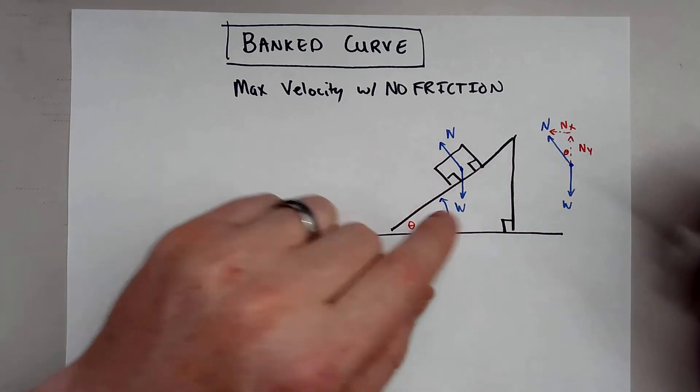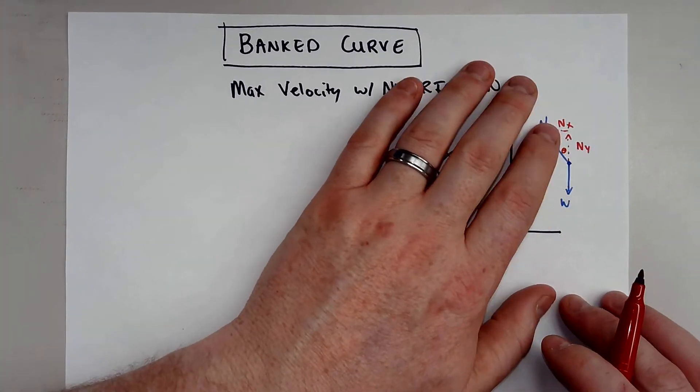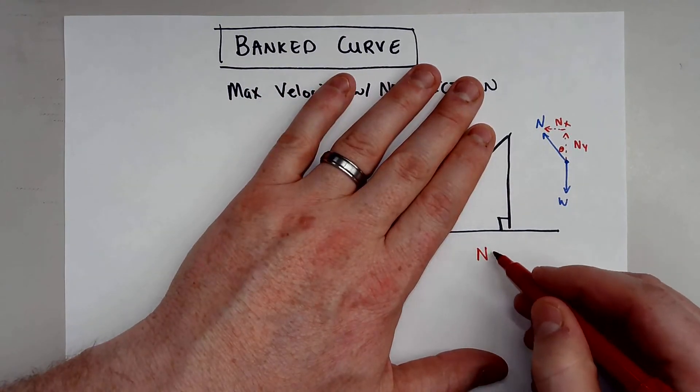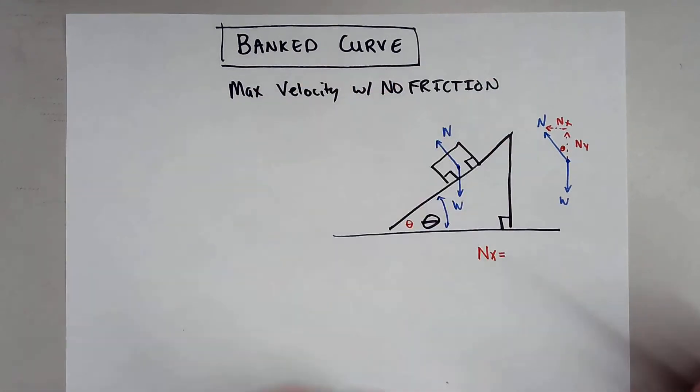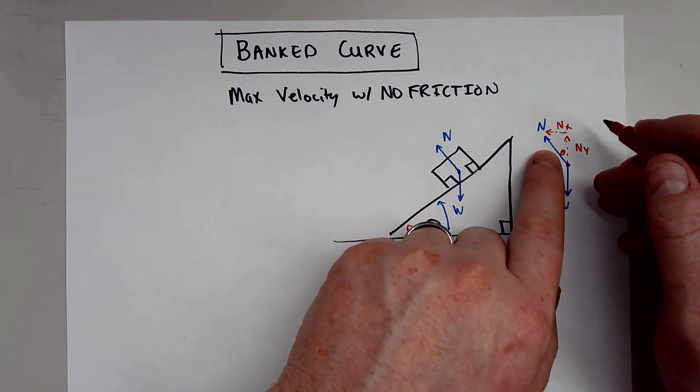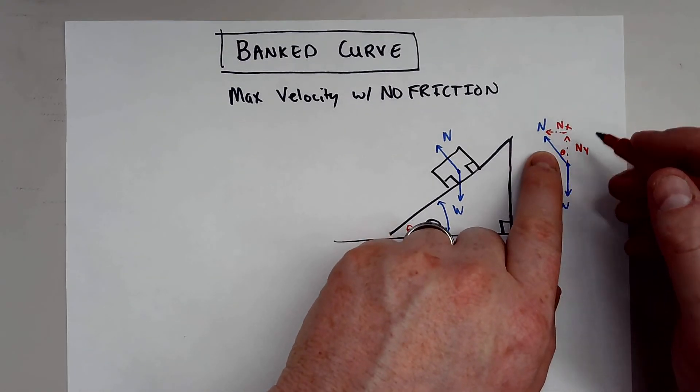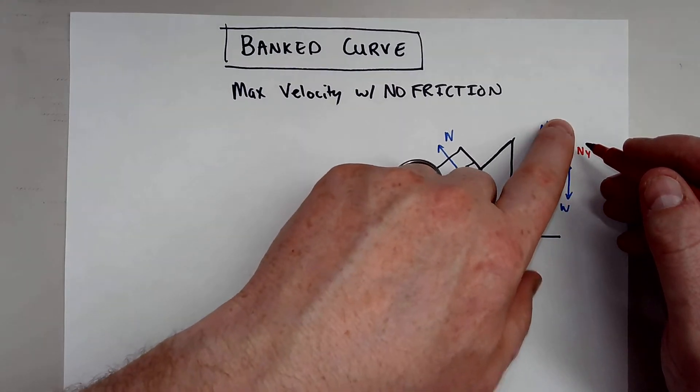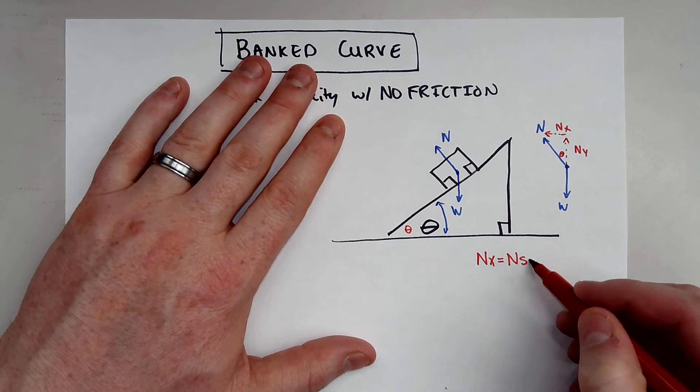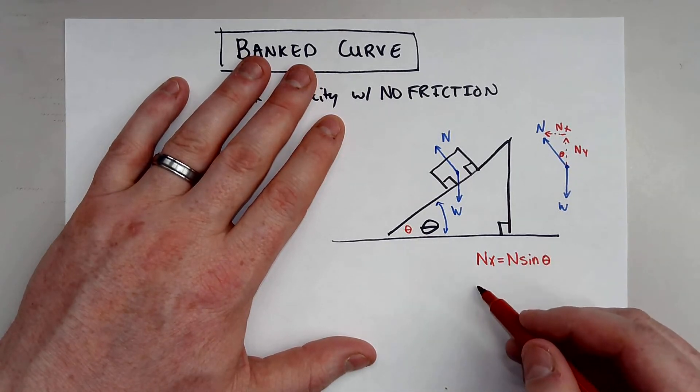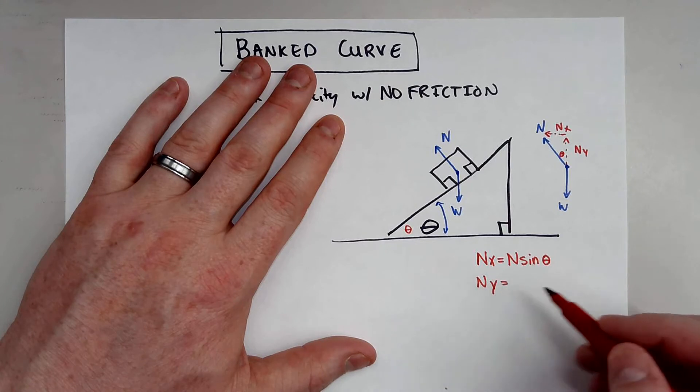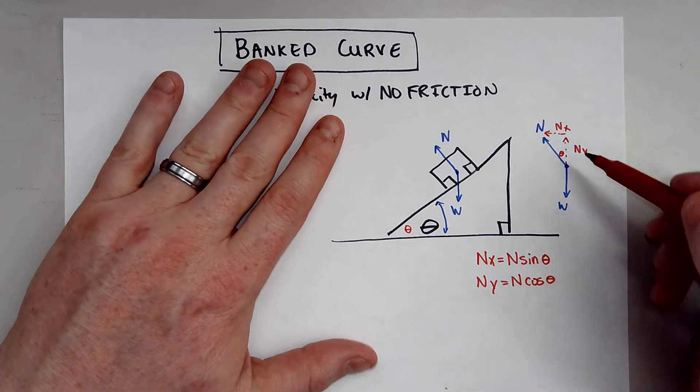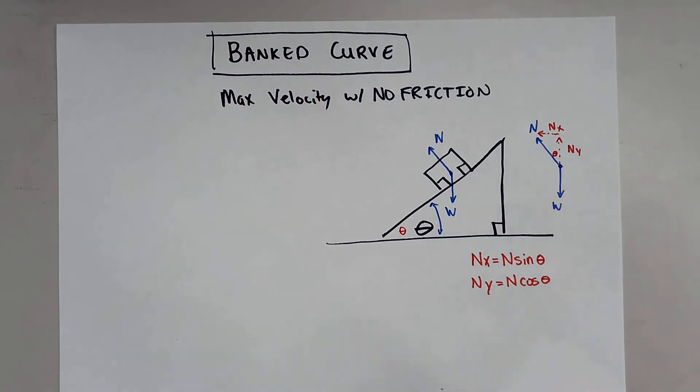So if you want to solve, the first thing I would suggest we do is let's solve for these two components in the x and y direction. So the normal force in the x direction will be equal to, so if this hypotenuse is n, and I'm looking for my x direction, so I have my hypotenuse and my opposite. That's actually going to give me sine. So n sine of theta. The y direction will be n cosine of theta because I have the adjacent side and my hypotenuse.